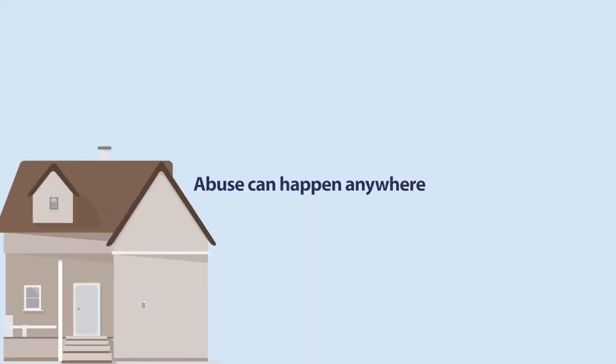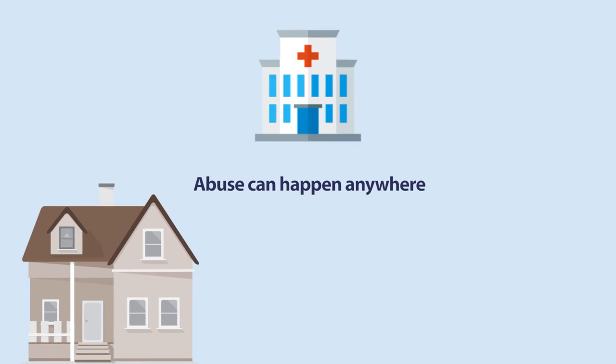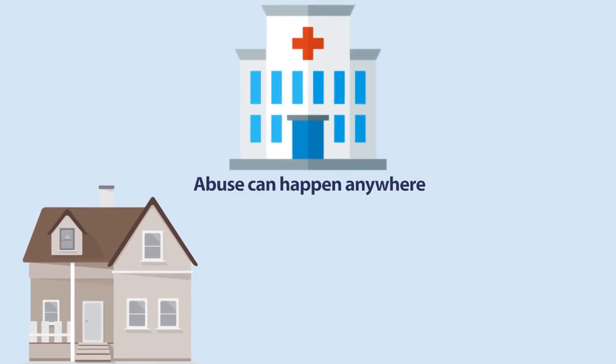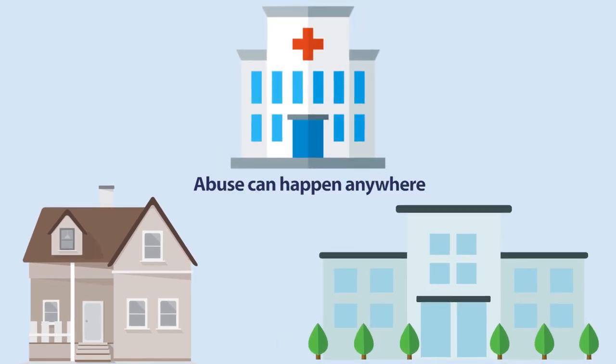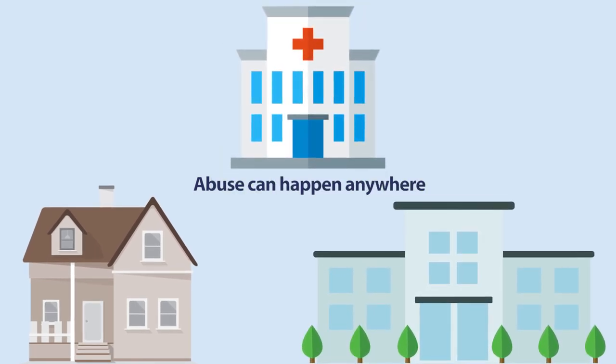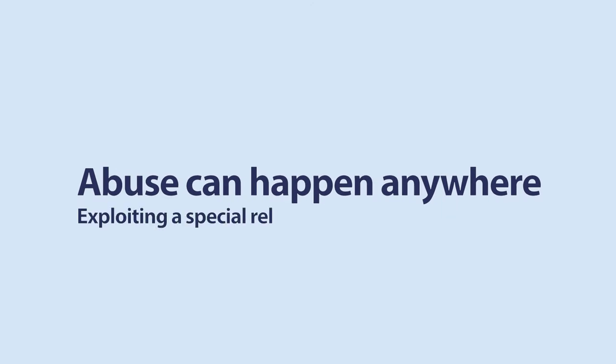Abuse can happen anywhere — in your own home, at hospital, in a care home, or even in a community setting. Often the people who abuse are exploiting a special relationship with an older person.